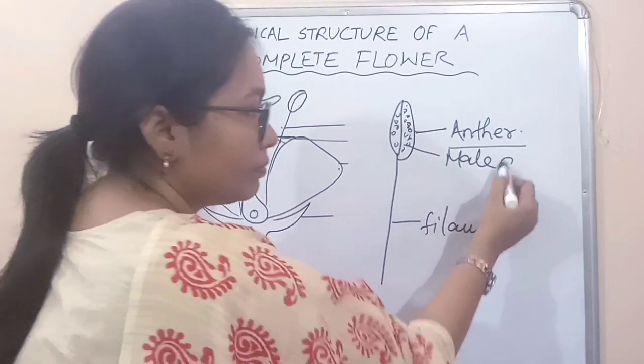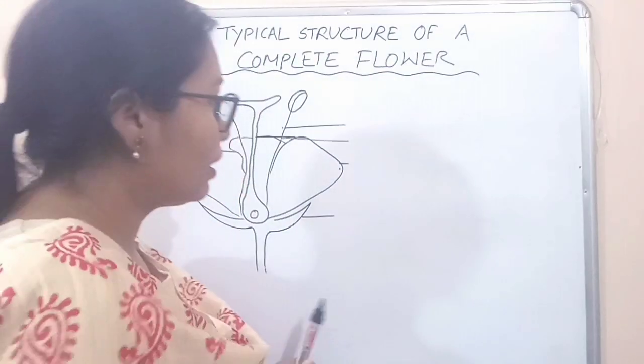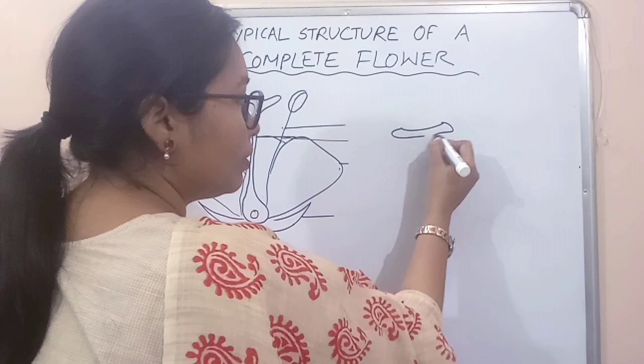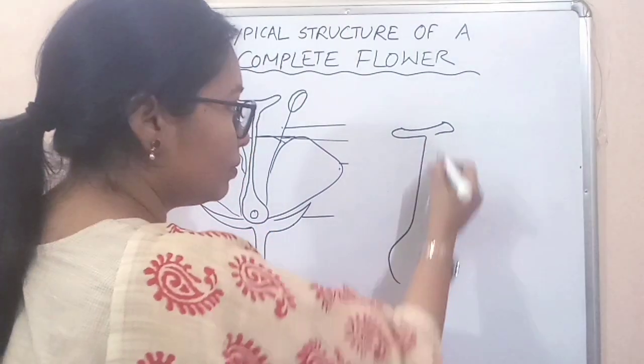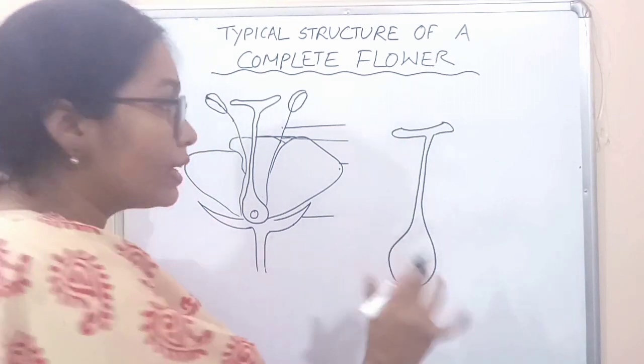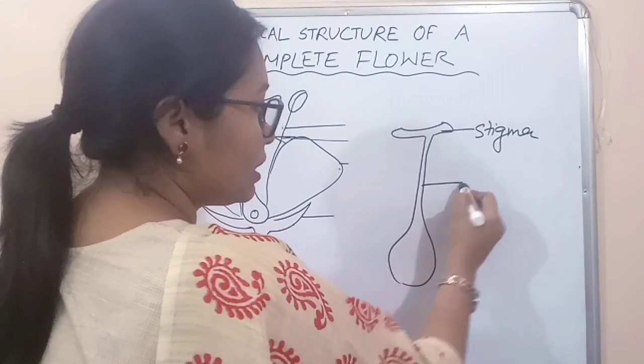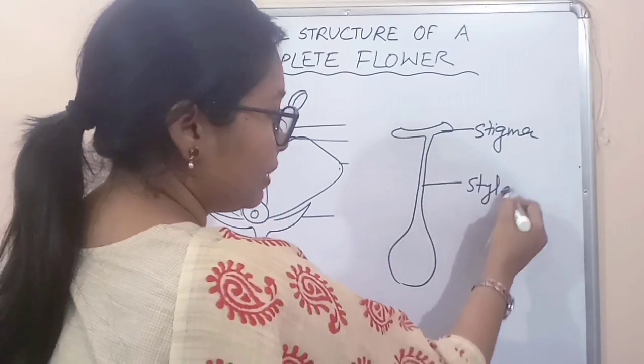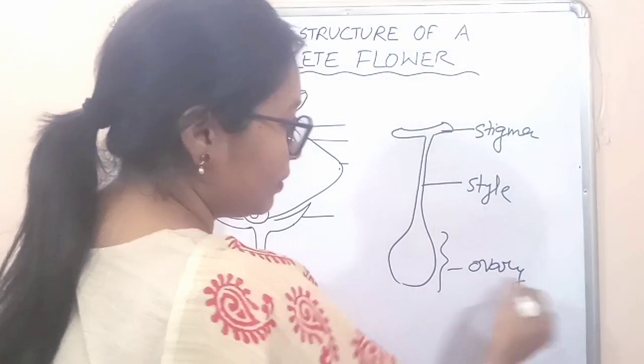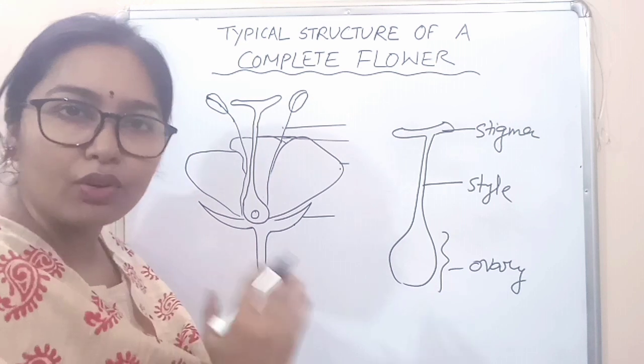Pollen contains the male gametes. So the female part—the female part consists of stigma, style, and ovary. The whole part is known as gynoecium and it is the female part of the flower.